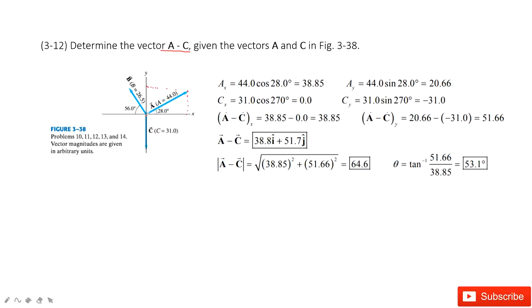Then for c, we can see c is along the y direction, so the x component is zero. We can also consider the angle c is 270 degrees. And cy is negative 31. We must pay attention to this negative sign, the c pointing to the negative direction.